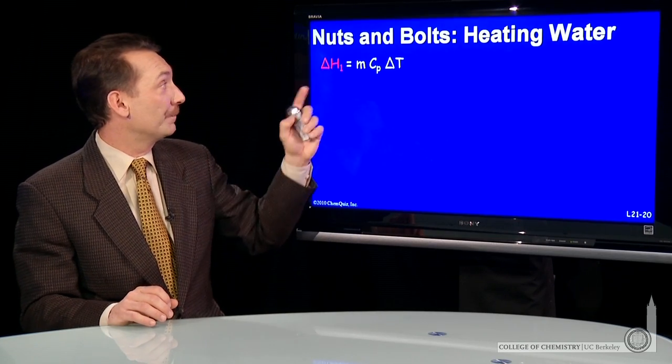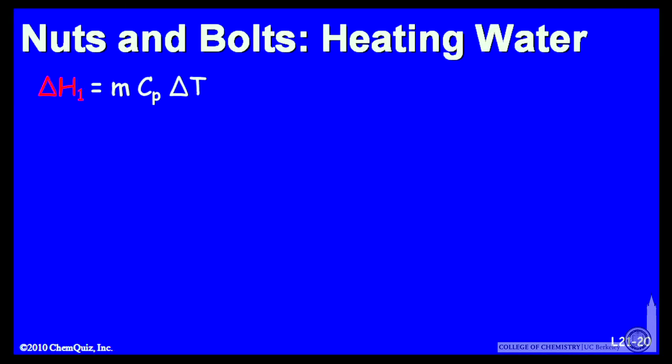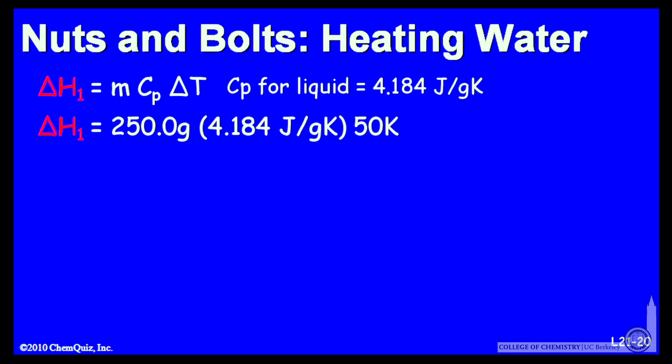So we can calculate each one of them. Delta H1, the enthalpy change for warming the liquid water. I'll need the heat capacity for liquid water, 4.184 joules per Kelvin gram. 250 grams is the mass of water. The heat capacity, 4.184 joules per Kelvin gram, and a 50 Kelvin temperature change.